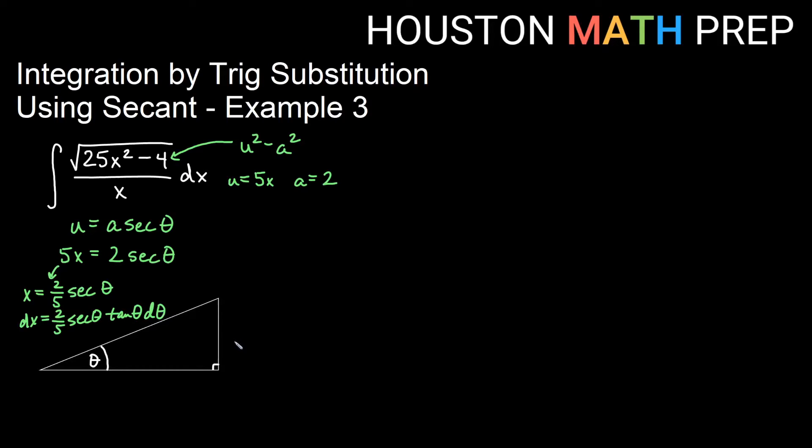Another thing that I want to be able to do is also figure out what is secant theta so I can construct my right triangle. So if we're wanting that I really need to divide both sides by 2. So I would want to say that secant of theta is equal to 5x over 2.